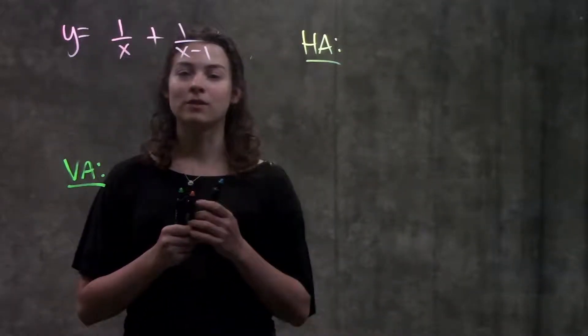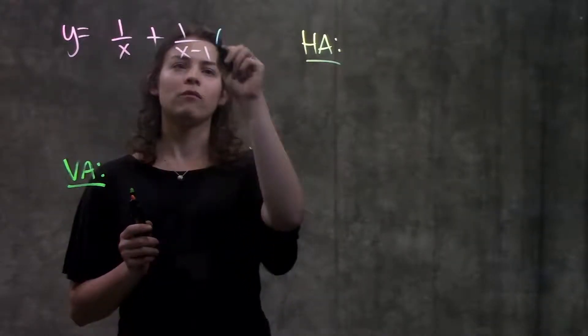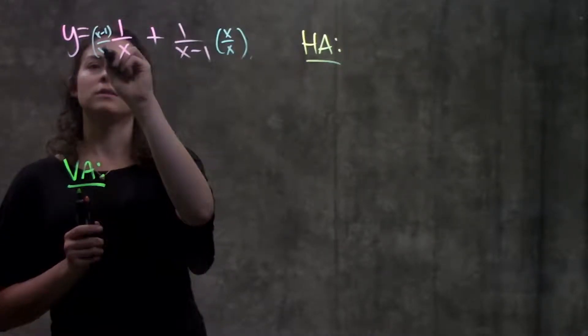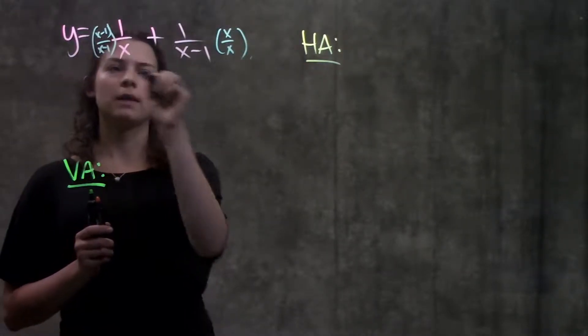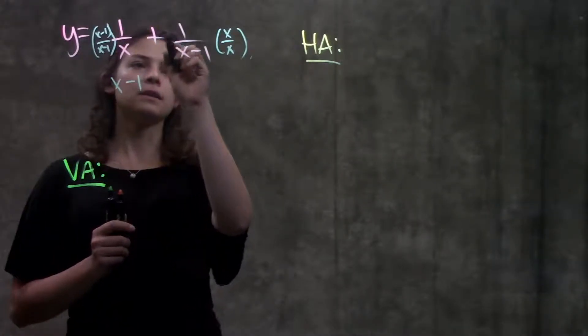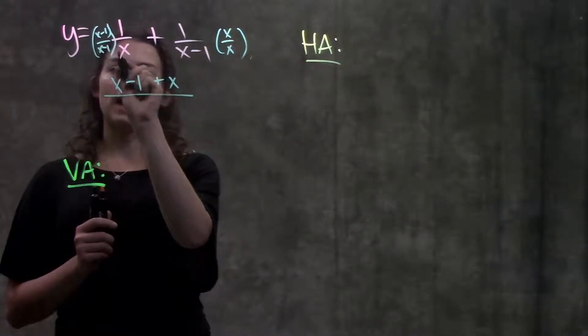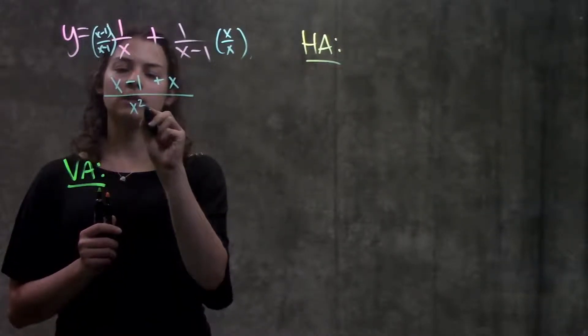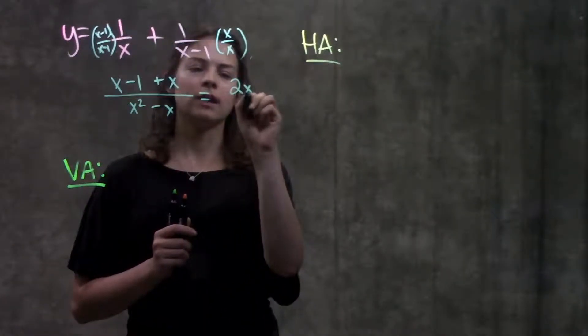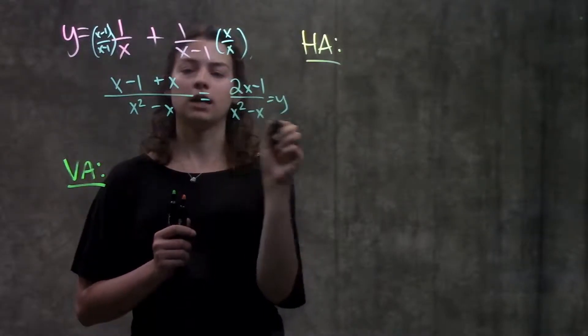Before I even start finding my asymptotes though I'm first going to simplify this a little bit and combine my fractions. Remember in order to combine fractions they need to have the same denominator. So I'm going to multiply both of these by the other denominator. Over here I'll get x minus 1 plus when I multiply this across I get plus x and all of this is over multiply x by x minus 1 you get x squared minus x. And simplifying the top I have 2x minus 1 over x squared minus x. Alright here's my function.